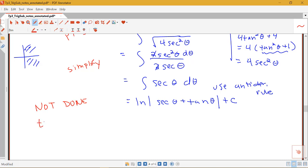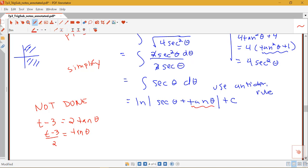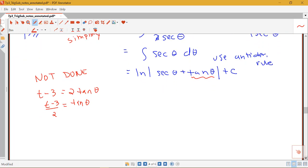So I had started with t minus 3 equals 2 tangent theta. So I know that t minus 3 over 2 is equal to tangent theta. That takes care of this part, but then I need to figure out what secant theta is in terms of t. So that's why I've got to draw the triangle. I have my right triangle here. Tangent theta is t minus 3 over 2, so that's opposite over adjacent. The hypotenuse will be the square root of 4 plus t minus 3 squared.